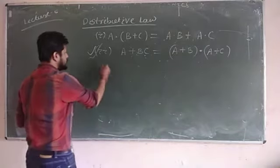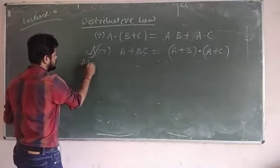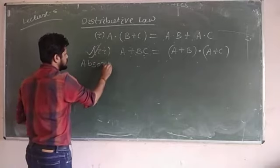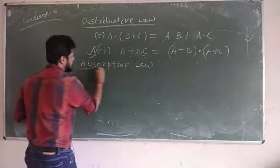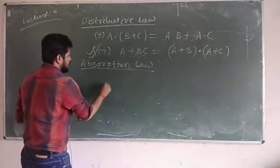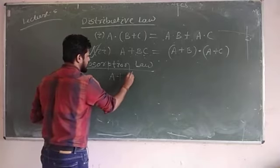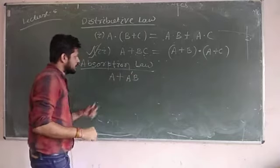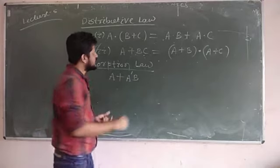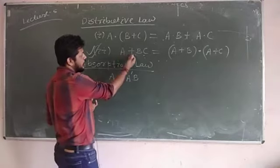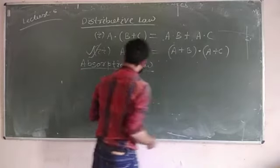The application of this distributive law is known as the absorption law. Here we are given A OR (A complement · B). Just apply the distributive law: A OR (B AND C) equals (A OR B) AND (A OR C).